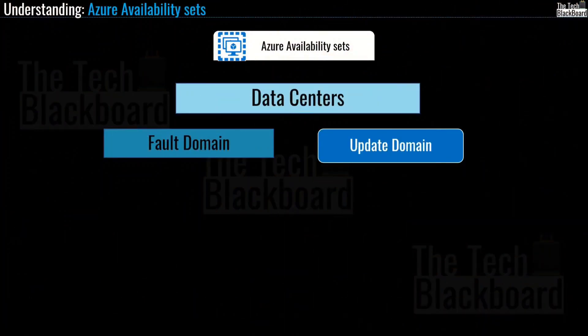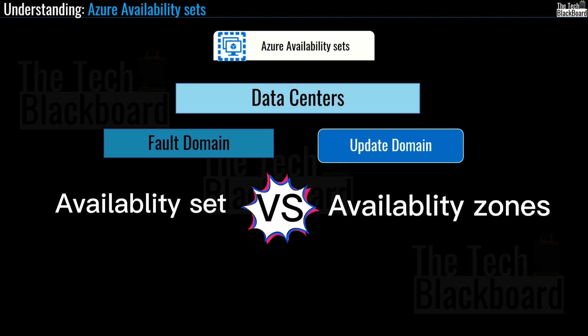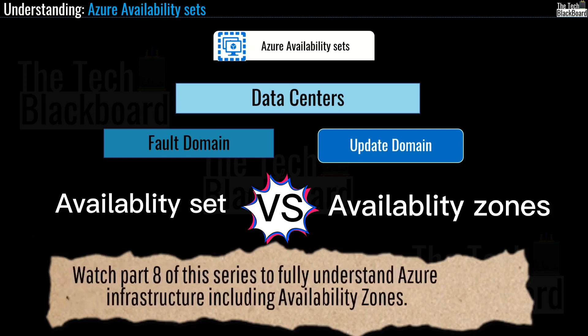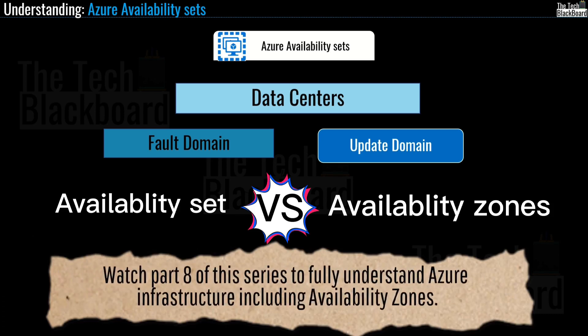The concept of availability sets, fault domains and update domains can be a little tricky. A lot of people also confuse availability sets with availability zones — if that's the case, please refer to part 8 of this series where Azure global infrastructure is explained in full, including availability zones. For today I will stop here as we have covered a lot of complex topics. Please rewind and watch the video multiple times, and check the Microsoft documentation link in the description for more detail.